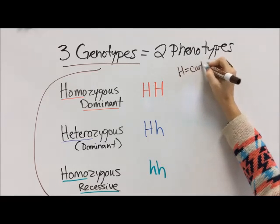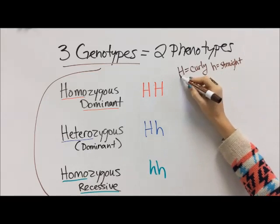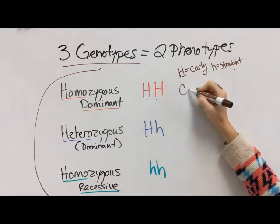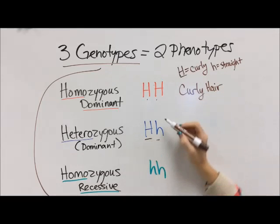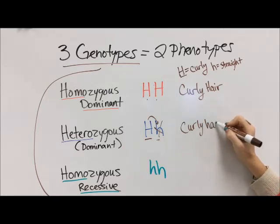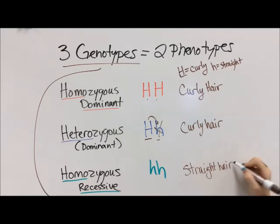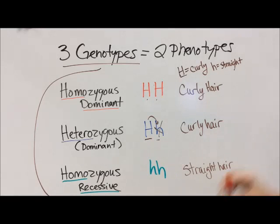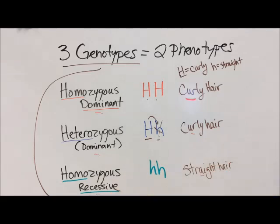If our phenotypes — remember, these letters represent a trait — big H, big H will give us curly hair because we have two of the same things. The big H, little H situation: big H covers up little H because curly is a stronger dominant trait, so we're going to have curly hair. And if we have little H, little H, then we're going to have straight hair. So if you are homozygous dominant for a trait, you have the dominant trait. If you're homozygous recessive, you have the recessive trait. And heterozygous, you always have the dominant trait.